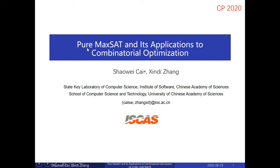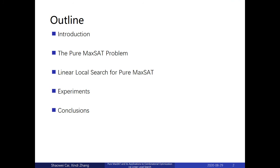Our work is about a new problem called Pure MaxSAT, which is a special case of MaxSAT. We show that it can be applied to solve several combinatorial optimization problems. This is the outline of my talk. I will first introduce the background, then introduce our new problem called Pure MaxSAT. For this problem, we design a linear local search algorithm, and then we show its experiment results.